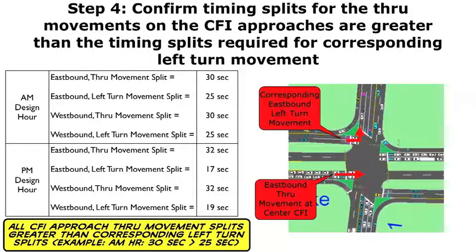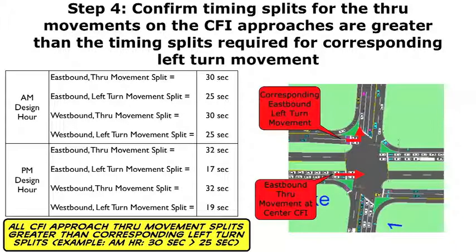With Step 4, once you know what the cycle length is, you need to confirm that the timing split movements for the through movements of the CFI approaches are greater than the timing splits required for those corresponding left turn movements. Back earlier, when we were looking at the main CFI traffic signal with highway capacity calculations, we were assuming that the left turns were going to be able to operate concurrently with the through movements. And now we're just checking. For example, during the AM design hour, I'm showing that the eastbound through movement split is 30 seconds and the eastbound left turn split is 25 seconds. Correspondingly, I'm showing the same calculations for the westbound movements. The through movement split is going to be high enough to satisfy the left turn movement splits with the CFI approach lanes.